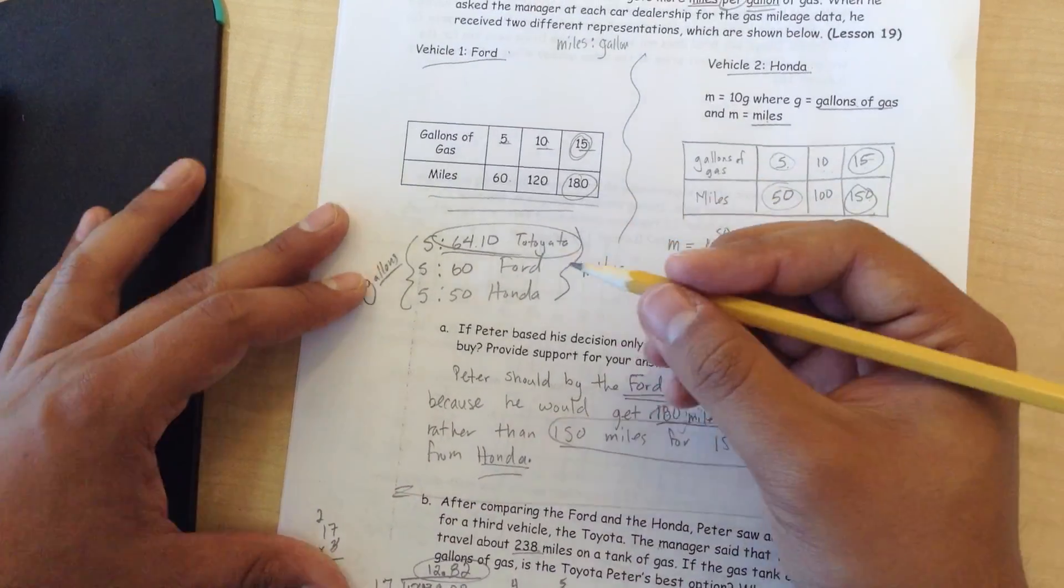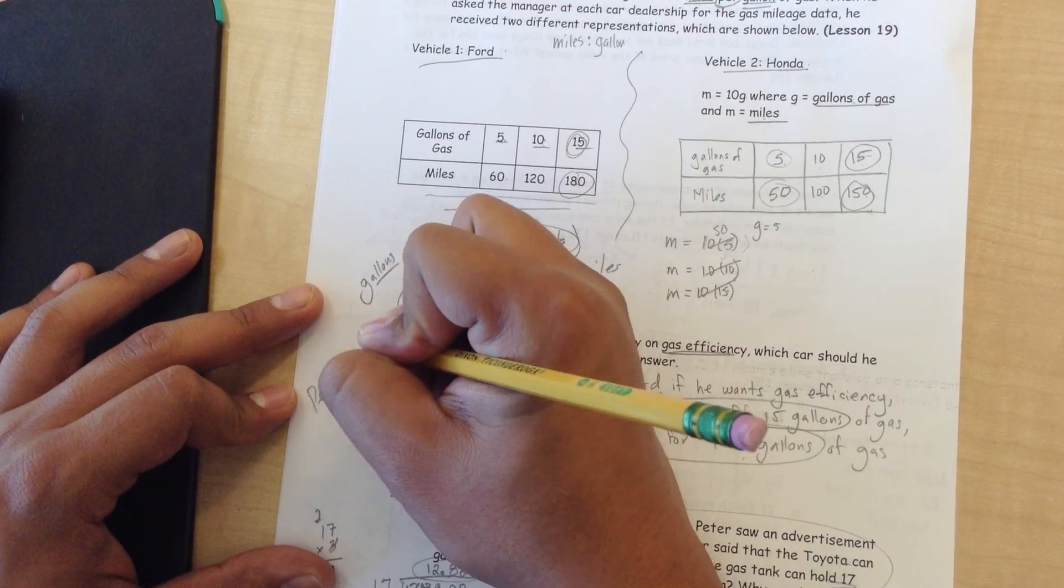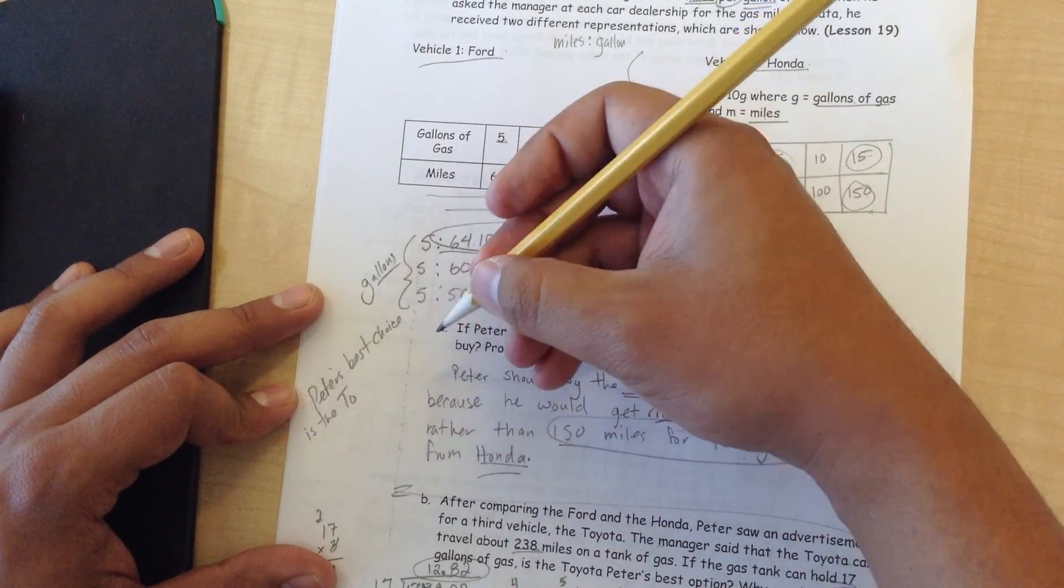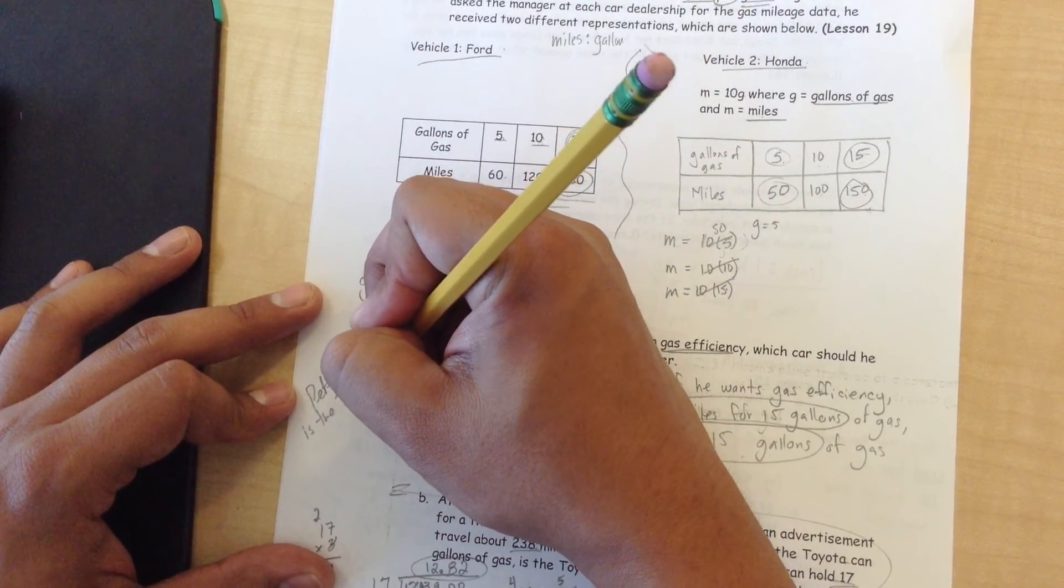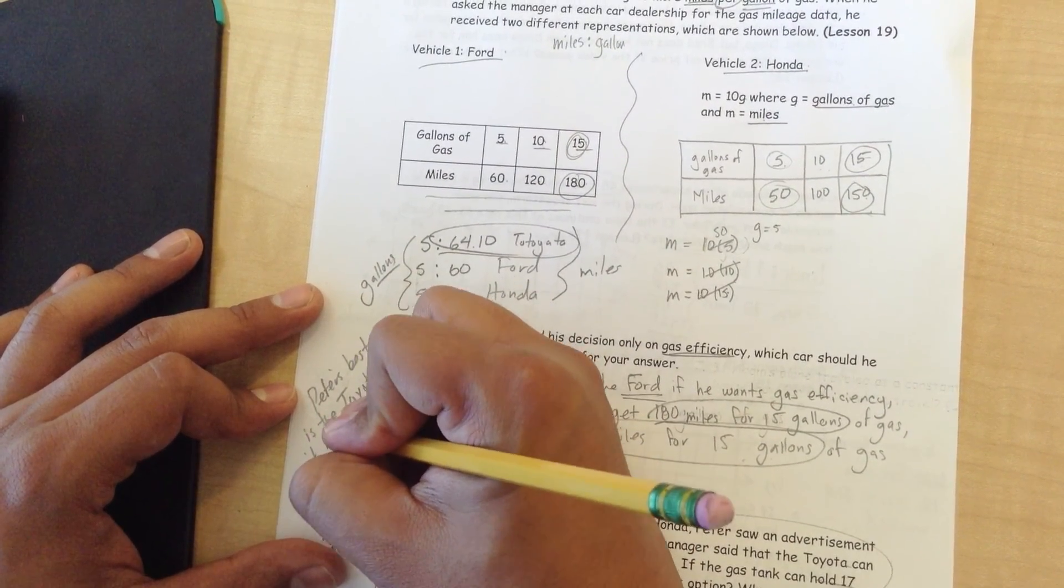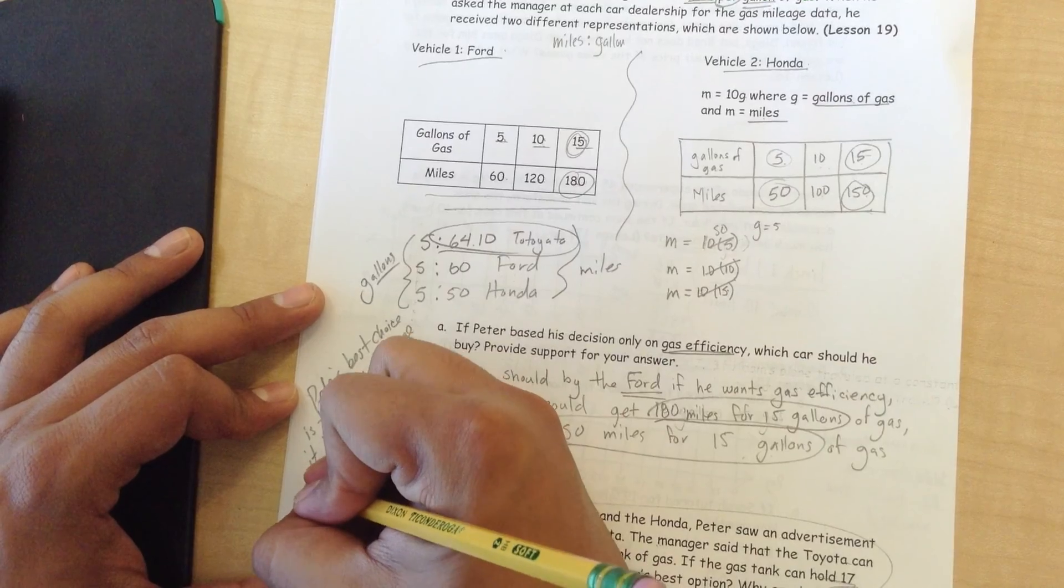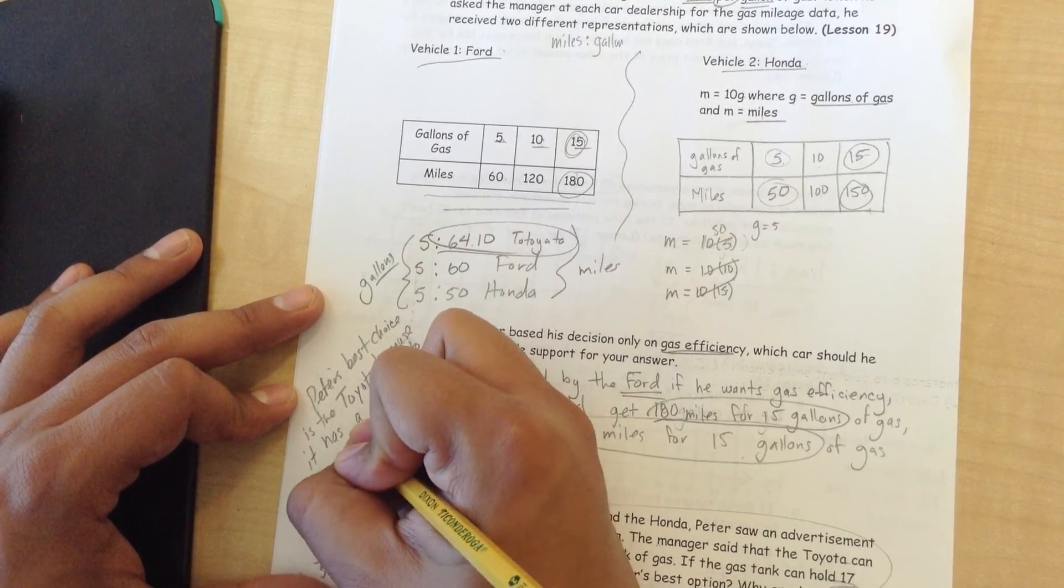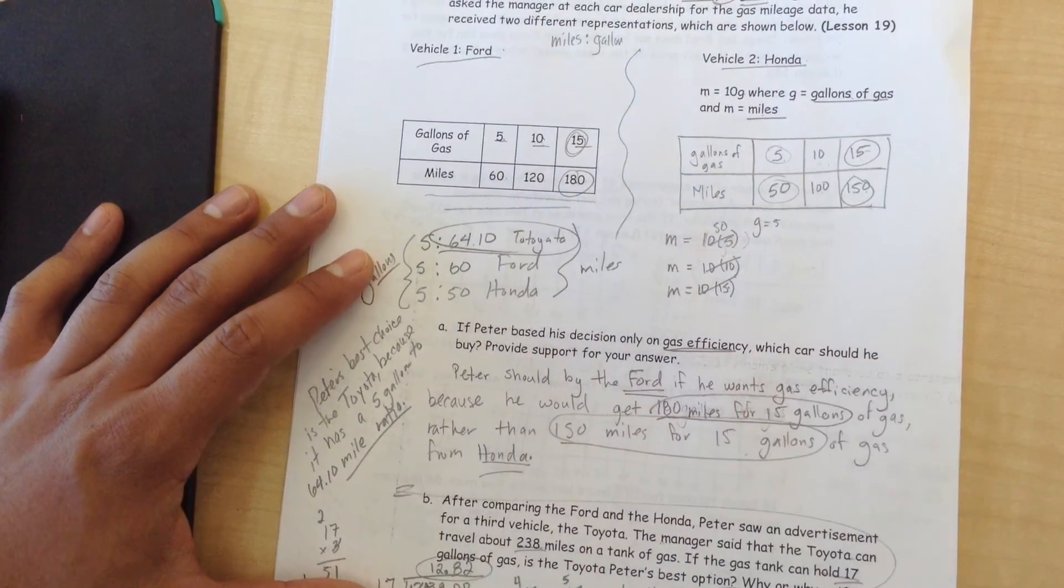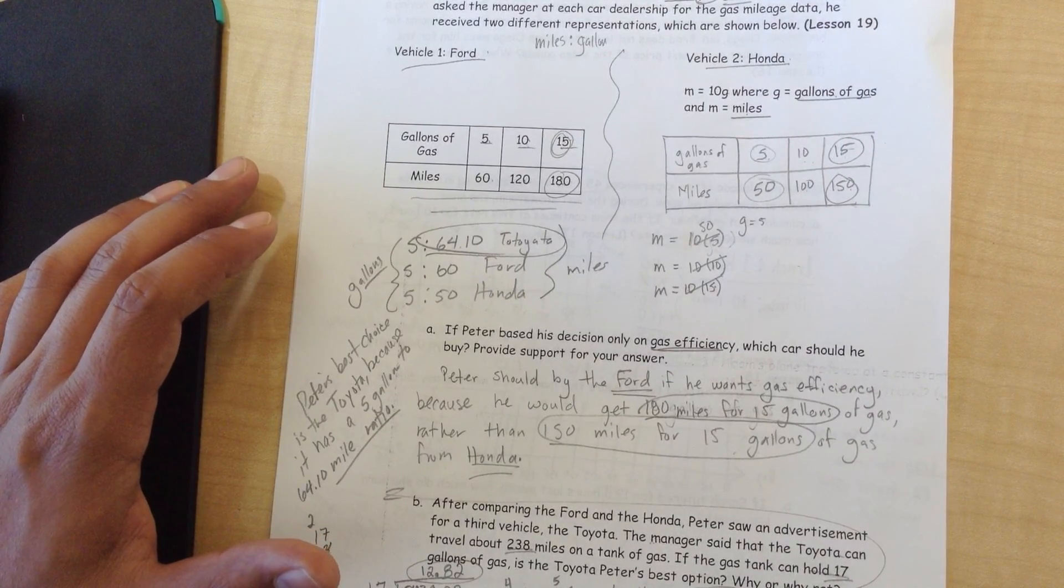I ran out of space here, so I'm going to write my answer right here. Peter's best choice is the Toyota, because it has a 5 gallon to 74.10 mile ratio. Can't beat that. Toyota. That's still a Japanese car compared to Honda and Ford.